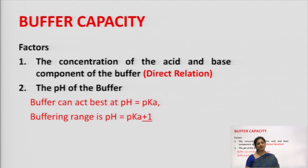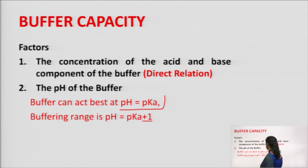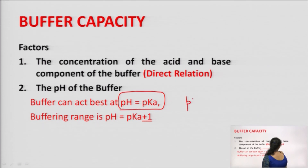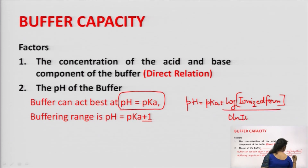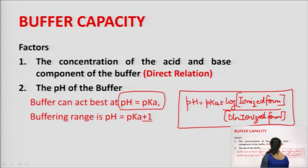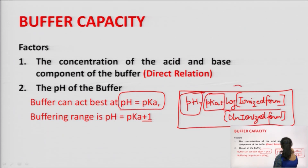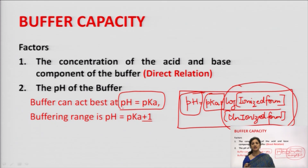The other factor on which buffer capacity depends is the pH of the buffer. The buffer acts best when pH equals pKa, and the buffering range is pH equals pKa plus or minus 1. In the Henderson-Hasselbalch equation, when pH equals pKa, the log term equals zero, meaning the ionized and unionized forms are equal — this is when the acid has maximum buffering capacity.